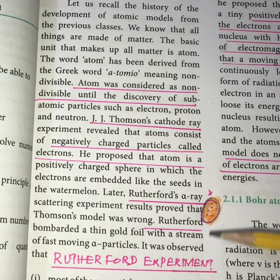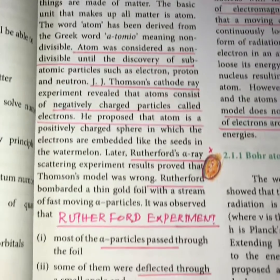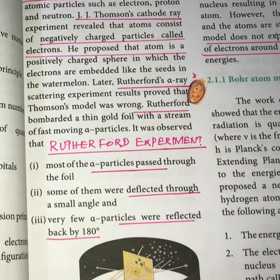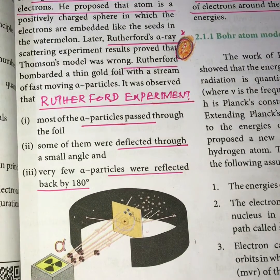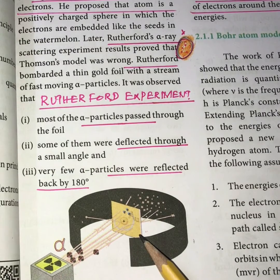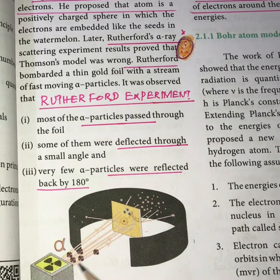Now, we are going to see what is Rutherford's alpha ray scattering experiment. In this experiment, the alpha particles are passed through a thin gold metal foil. The alpha particles are positively charged.